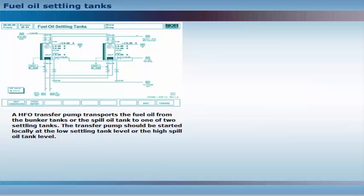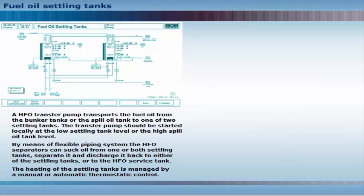The transfer pump should be started locally at the low settling tank level, or the high spill oil tank level. By means of a flexible piping system, the heavy fuel oil separators can suck oil from one or both settling tanks, separate it, and discharge it back to either of the settling tanks or to the heavy fuel oil service tank.